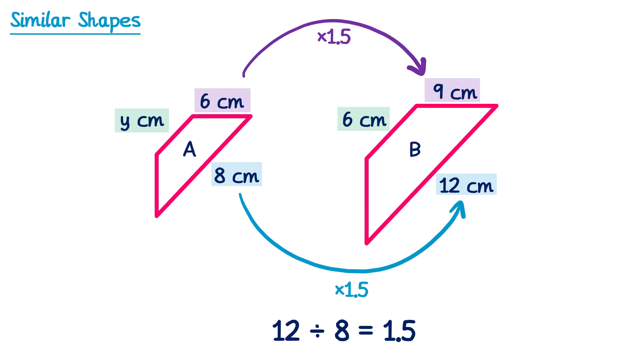To work out Y I'm going in the opposite direction, so I divide by 1.5. 6 divided by 1.5 is 4, so Y is 4.